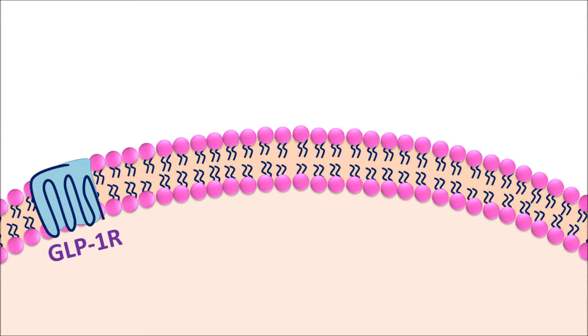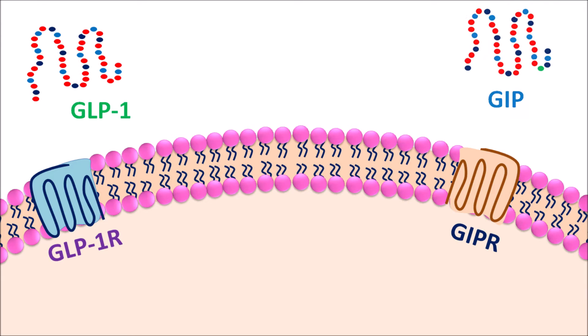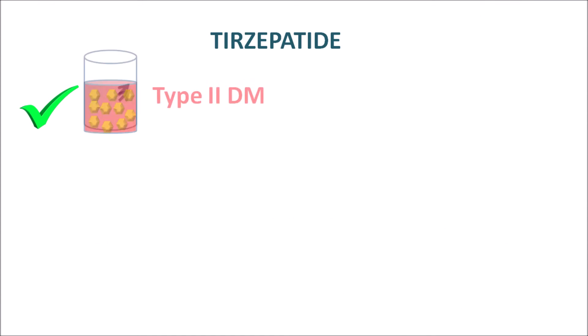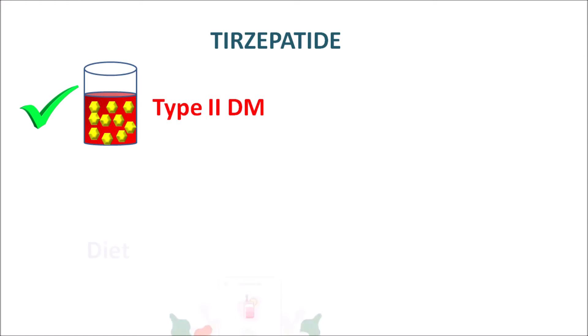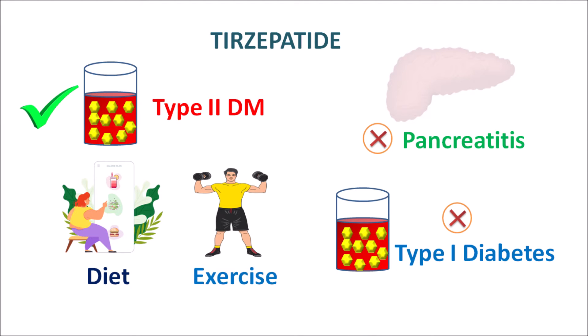On the pancreatic beta cells, GLP-1 receptors are present as well as GIP receptors are expressed. GLP-1 and GIP can act on their corresponding receptors to increase insulin secretion. These are the natural incretins controlling excessive glucose levels. Tirzepatide acts as an agonist on both of these receptors, thereby increasing insulin secretion. That's why this drug is used in the treatment of type 2 diabetes mellitus, along with diet control and proper exercise. However, this drug is contraindicated in patients with any history of pancreatitis and is not suitable for type 1 diabetes mellitus.